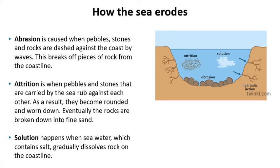The third way the sea erodes the coast is by abrasion. Abrasion is caused when pebbles, stones, and rocks are dashed against the coast by the waves. As the sea comes in, it carries what's called its load — shells, rocks, pebbles, sand, and sediment — and as that sediment hits off the coastline, it breaks it down. If you stood there and a wave hit you and you felt something hard, that's probably a rock or shell carried in the wave. That's abrasion.